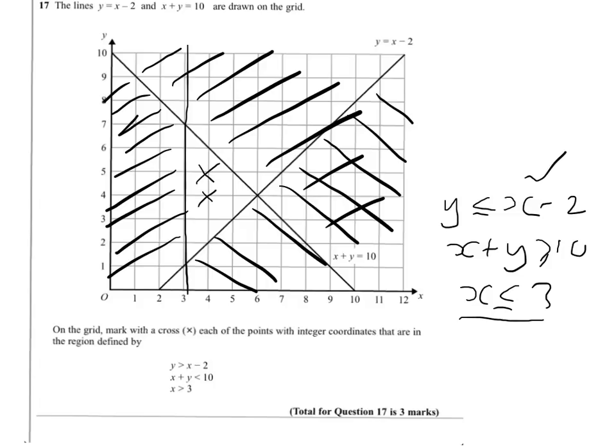We've got 1, 2, 3, 4. And those are the crosses where the integer conditions that are in the region are defined by the inequalities given. So those four crosses is what we're looking for. And that's your answer.